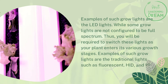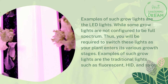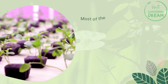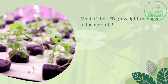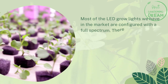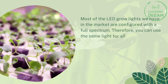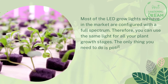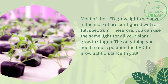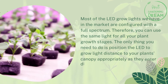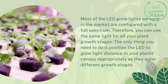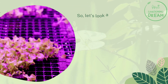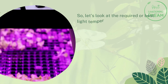Examples of non-full-spectrum grow lights are traditional lights such as fluorescent, HID, and so on. Most LED grow lights on the market are configured with a full spectrum, so you can use the same light for all your plant growth stages. The only thing you need to do is position the LED grow light distance to your plants' canopy appropriately as they enter different growth stages.